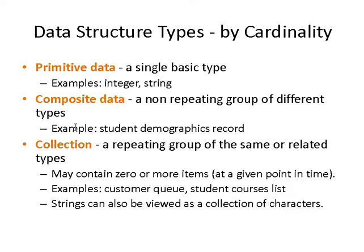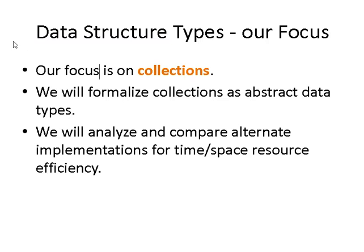The third category is a collection: a repeating group of the same or related types. It may contain zero items at a given point in time, but its purpose is to contain many items. Examples are customer queues and student course lists. Strings, while being primitive types, can also sometimes be viewed as collections of characters. Our focus on data structures will be on collections. We will formalize collections as abstract data types and analyze and compare alternate implementations with respect to time and space resource efficiency.